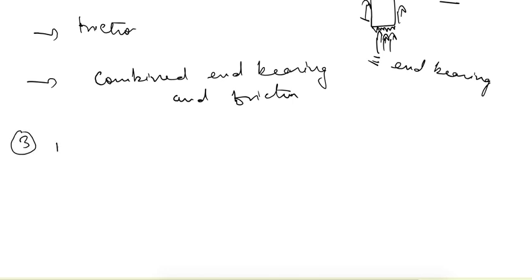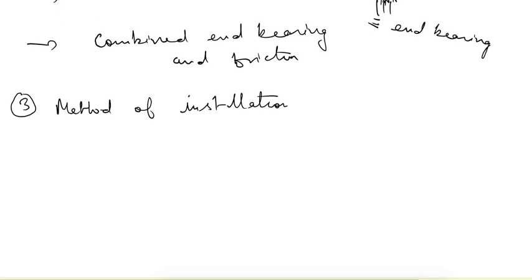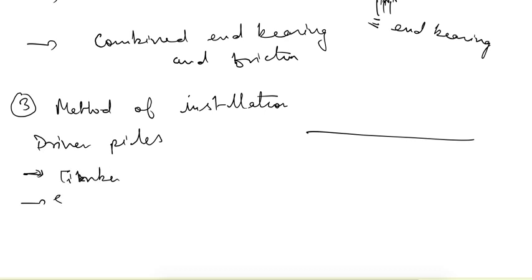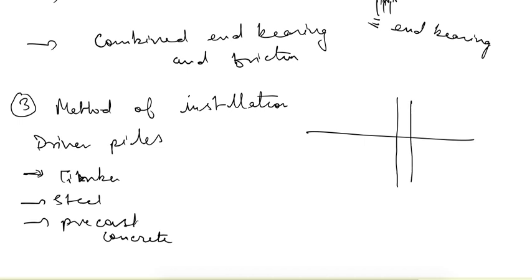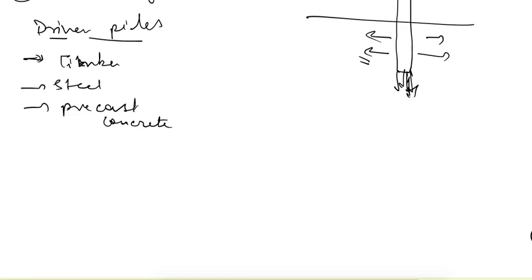The third criteria is based upon the method of installation. First one is driven piles. In this case, we first construct the piles from timber, steel, or precast concrete. Then with the help of some driving instrument, we simply drive the pile inside the soil. So we are not digging a hole; we are simply pushing the soil downwards, and because of that some movement of the soil will happen. That way it is called a driven pile.